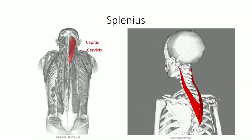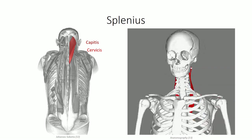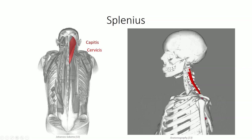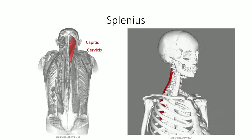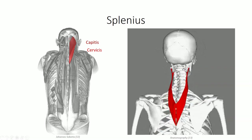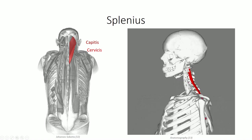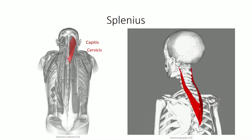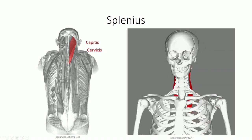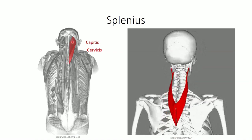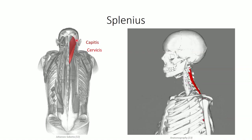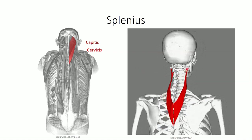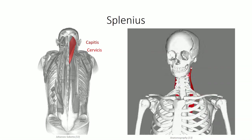The first intrinsic back muscle we will identify is splenius. The name is of Latin origin, meaning bandage, due to the fact that this rather broad muscle covers over a large number of smaller, deeper muscles in the cervical region. Splenius originates off the nuchal ligament and spinous processes C7 through T3 or T4. The superficial capitis fibers insert on the mastoid process and superior nuchal line of the skull, while the deeper cervicis fibers insert on the transverse processes of C1 through C4.